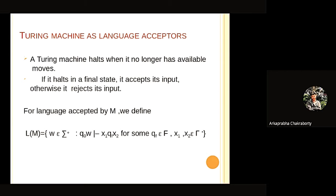A Turing machine halts when it has no longer moves. If it halts in its final state, it accepts its input, otherwise it rejects its input.